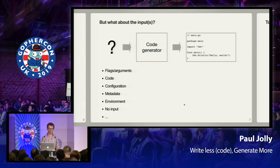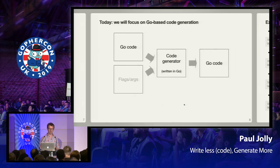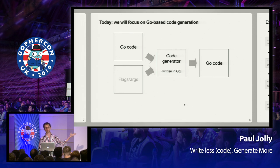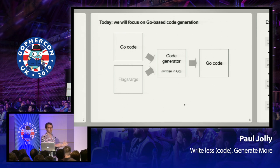Today we're going to focus on Go-based code generation — generating Go code using a code generator written in Go, using as our input Go source code. This might seem a bit counterintuitive, but it'll become clearer as we go.